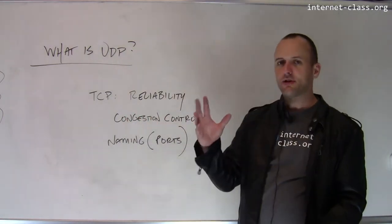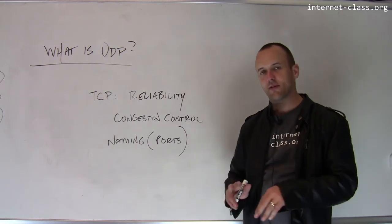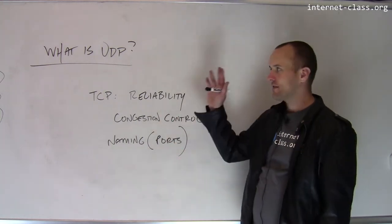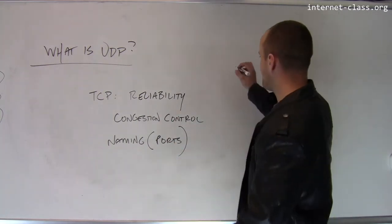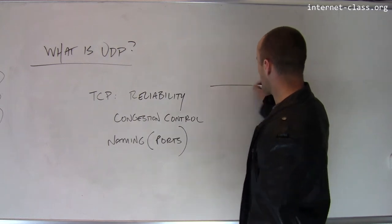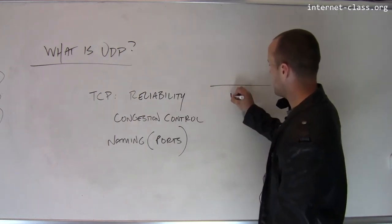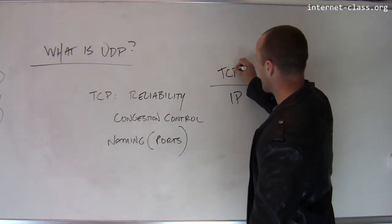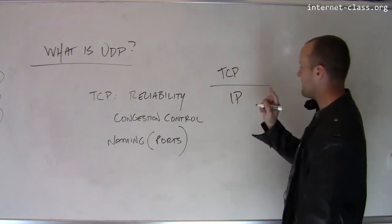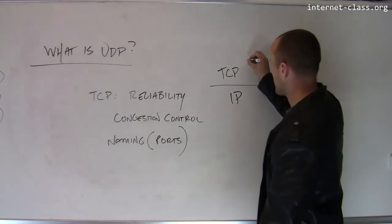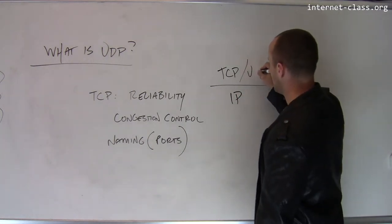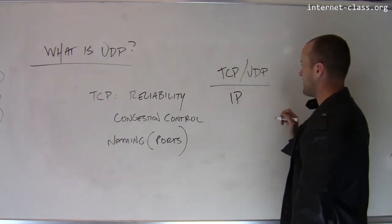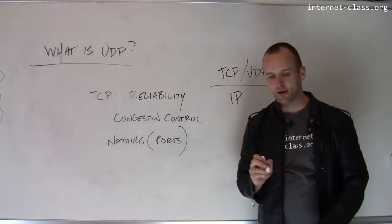There's an additional part of the widely deployed transport layer known as UDP. We sometimes think of the IP layer down here and TCP running up here, but there's this extra protocol deployed at the transport layer called UDP, or the Universal Datagram Protocol.